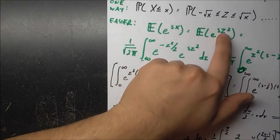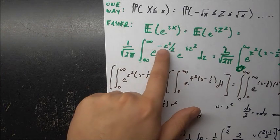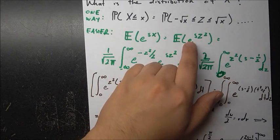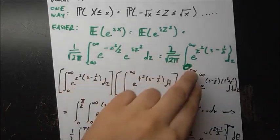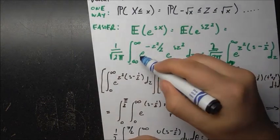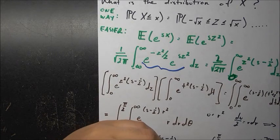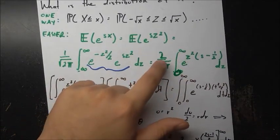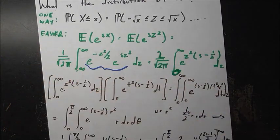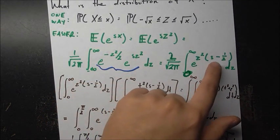The integrand is an even function because z only appears as z², so the integral from -∞ to ∞ equals twice the integral from 0 to ∞. Pulling out the factor of 2 and combining the exponents, we get z²·(s - 1/2). To evaluate this, we compute the square of the integral by writing two copies with variables z and t, combining them into a double integral, and converting to polar coordinates: t² + z² = r², and dt dz = r dr dθ.